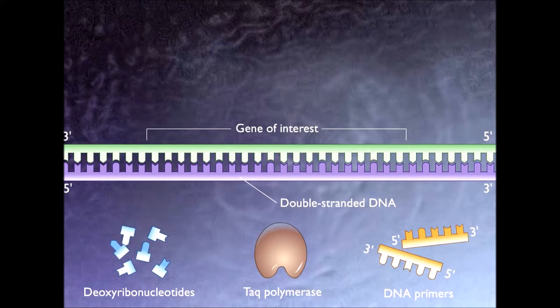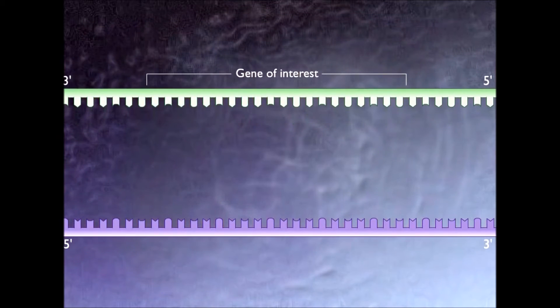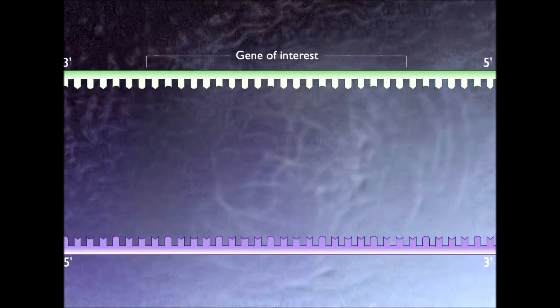Denaturation at 94 degrees Celsius. During the denaturation, the double strand melts open to single-stranded DNA. All enzymatic reactions stop.